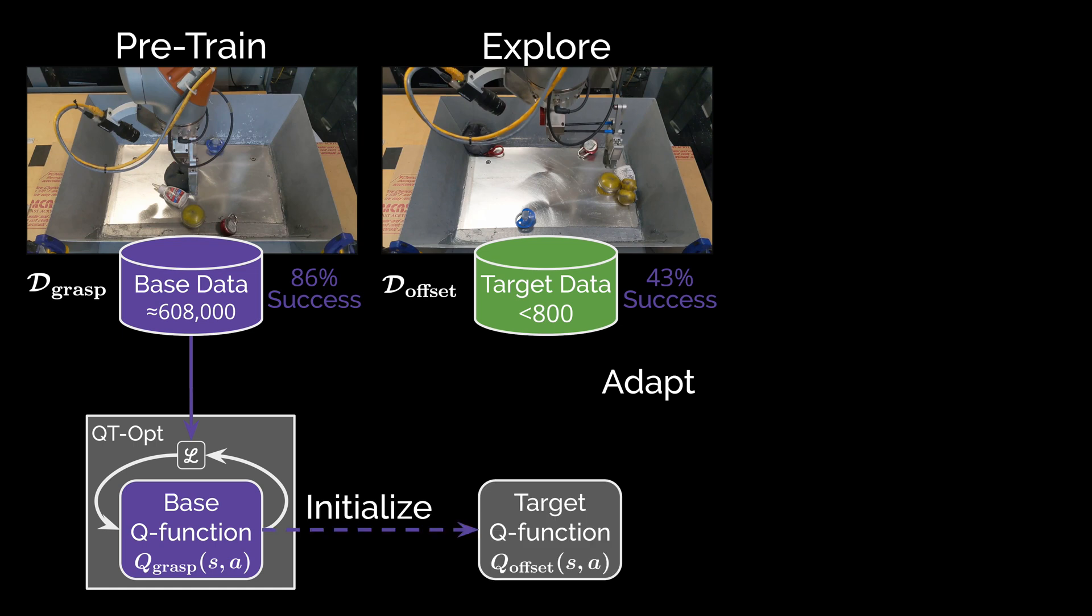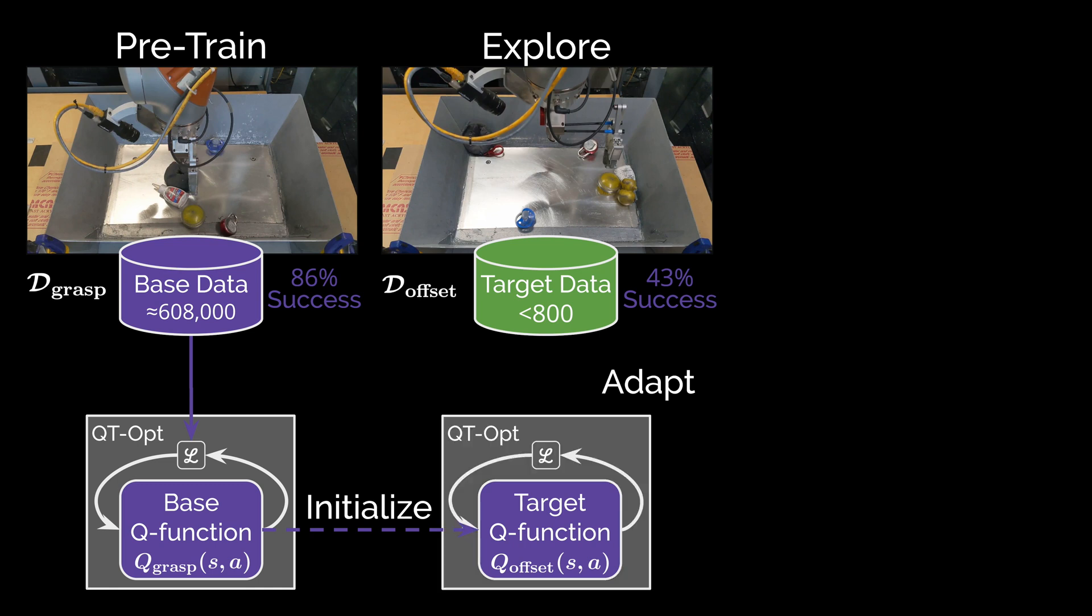First, we initialize our target Q function using the parameters from the base Q function, which we acquired during pre-training. We then use QTOpt again, this time to fine-tune the pre-initialized target Q function using the new data. We sample data with equal probability from both the base dataset, which we used for pre-training, and the target dataset, which we collected during exploration.